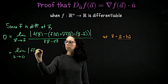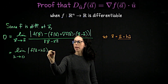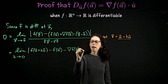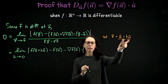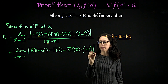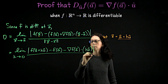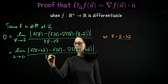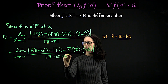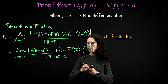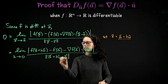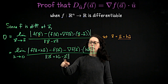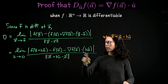This gives us the limit as the scalar h goes to zero of: f of a plus hu, minus f of a, minus the gradient of f at a dotted with x minus a — but x minus a is hu. That is our new numerator. The new denominator is the distance between a plus hu and a, which simplifies to the norm of hu. Since u is a unit vector, the norm of h times u is just the absolute value of h.